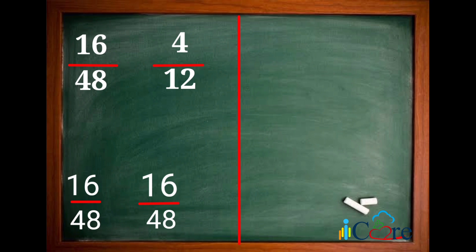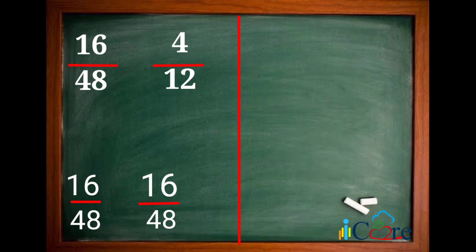Wait! Did you notice it? Yes! They have the same converted fractions. Since 16 over 48 and 16 over 48 is the same, they are equal. Thus, 16 over 48 is equal to 4 over 12.